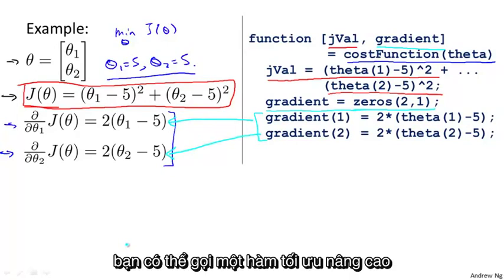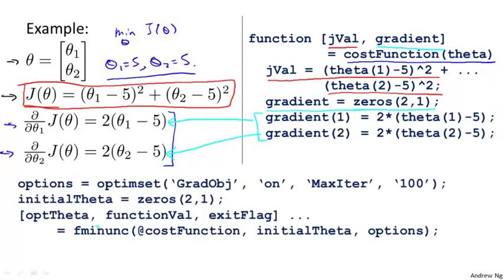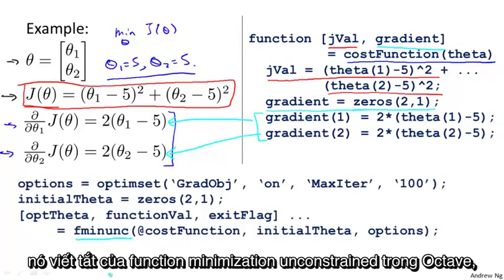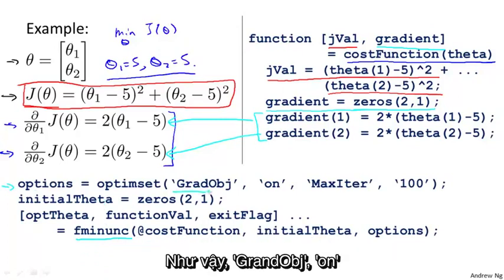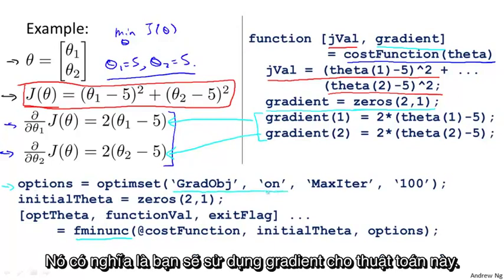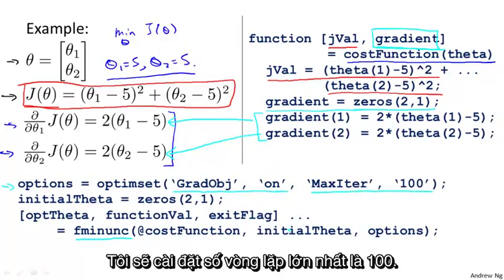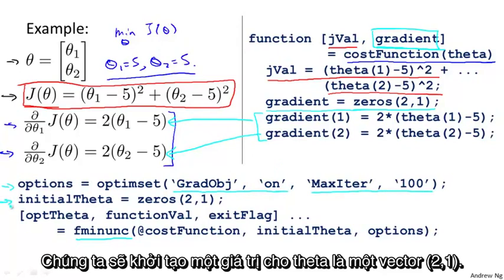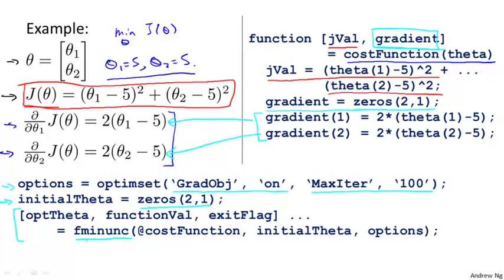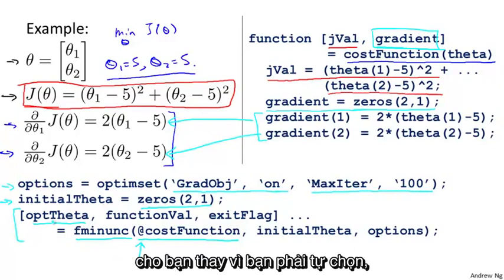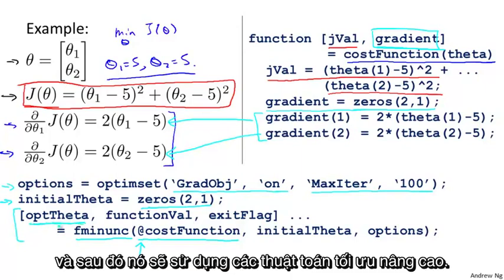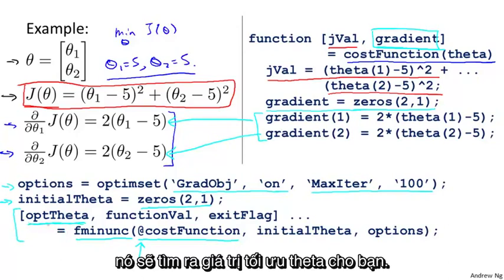Having implemented this cost function, you can then call the advanced optimization function called fminunc — it stands for function minimization unconstrained in Octave. The way you call this is as follows. You set a few options: options is a data structure that stores the options you want. GradObj on sets the gradient objective parameter to on, meaning you are indeed going to provide a gradient to this algorithm. And we set the maximum number of iterations to, say, 100. We give it an initial guess for theta — a two-by-one vector. Then this command calls fminunc. The @ symbol represents a pointer to the cost function we just defined. If you call this, it will use one of the more advanced optimization algorithms — think of it as just like gradient descent but automatically choosing the learning rate alpha for you — and it will attempt to find the optimal value of theta for you.